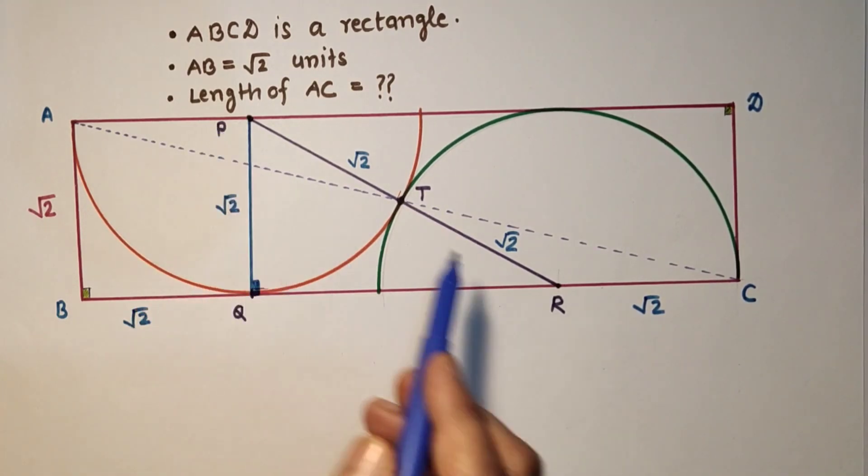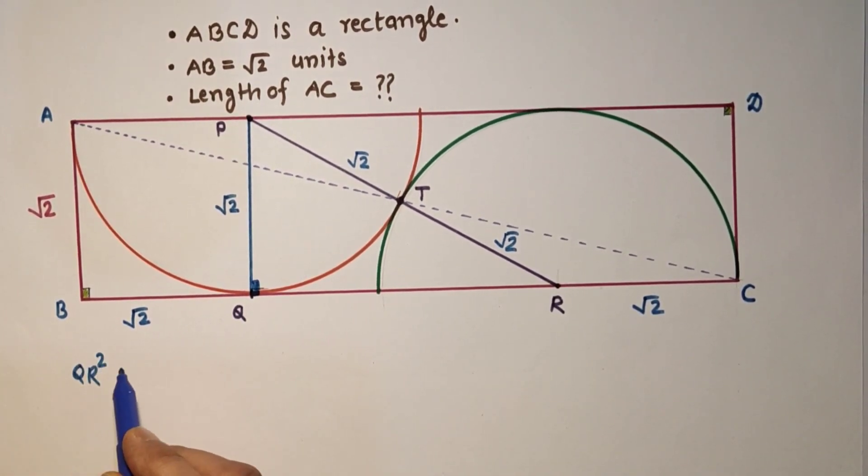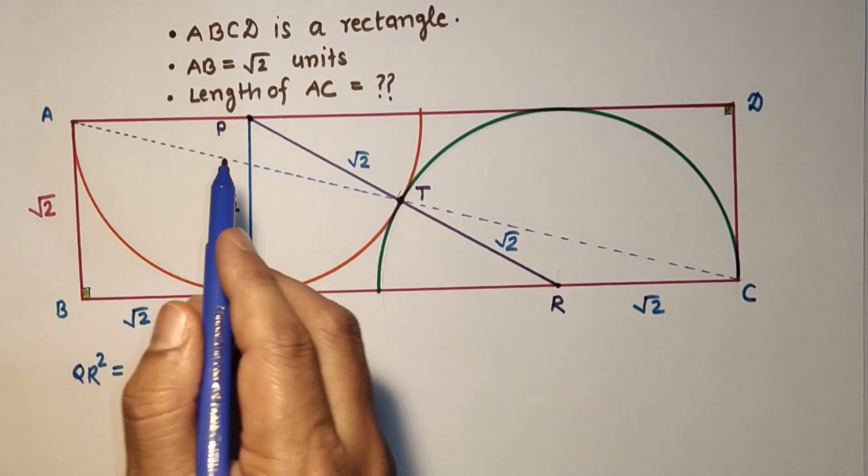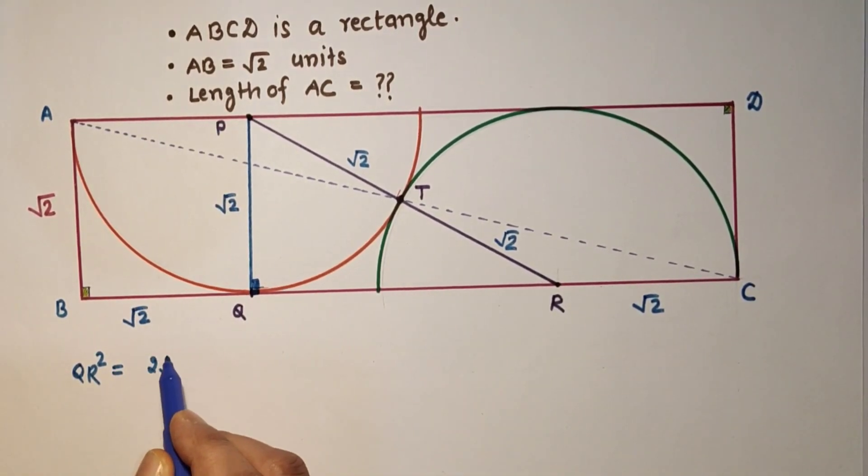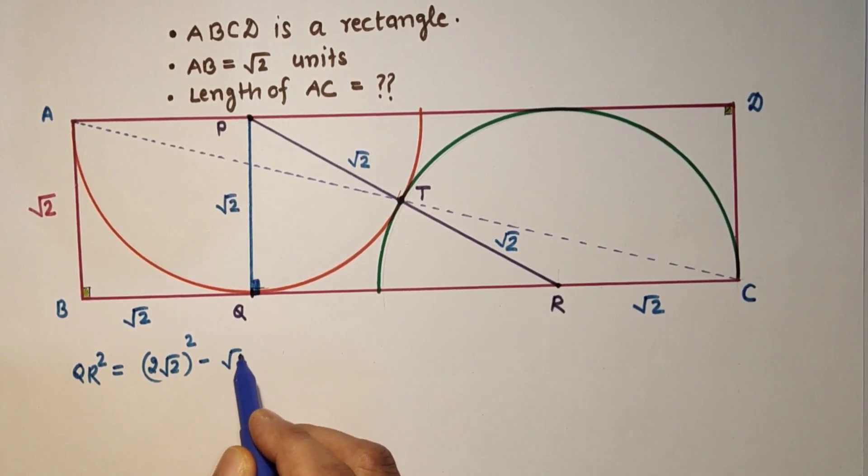So that will be PR square is equal to PQ square plus QR square. Therefore QR square is equal to PR square which is 2 root 2 squared, and minus root 2 squared.